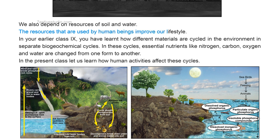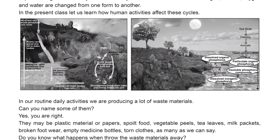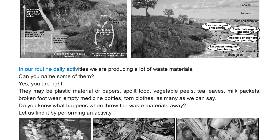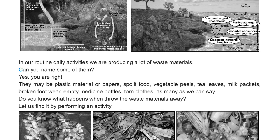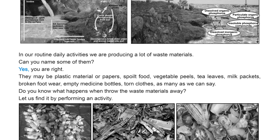We also depend on resources of soil and water. These resources improve our lifestyle. In class 9 we learned how different materials are cycled through the environment in biogeochemical cycles, where essential nutrients like nitrogen, carbon, oxygen, and water are changed from one form to another. In the present class, let us learn how human activities affect these cycles.